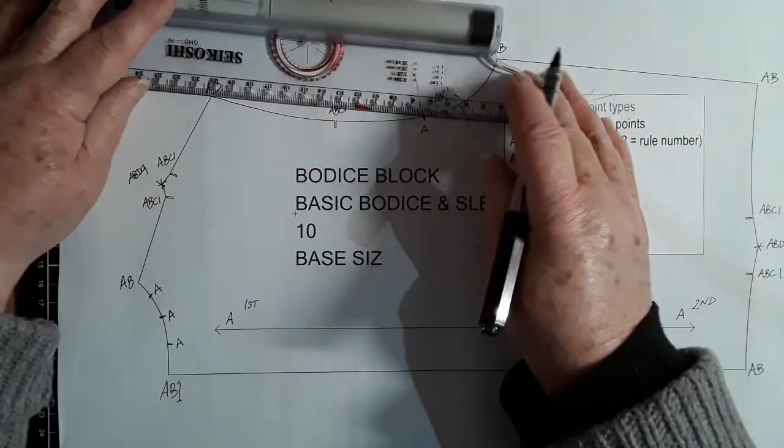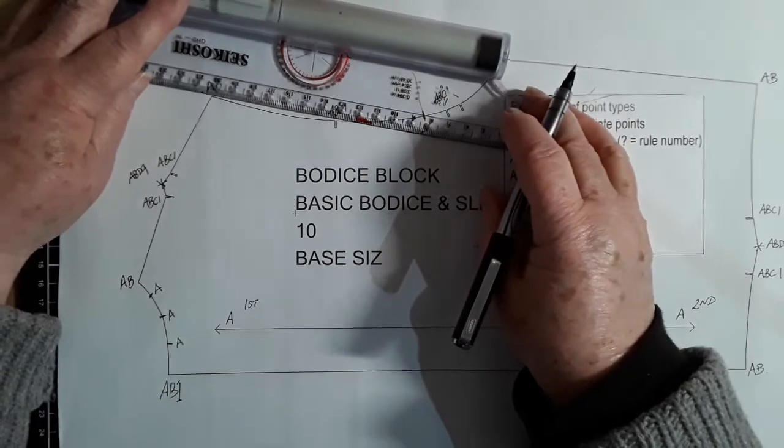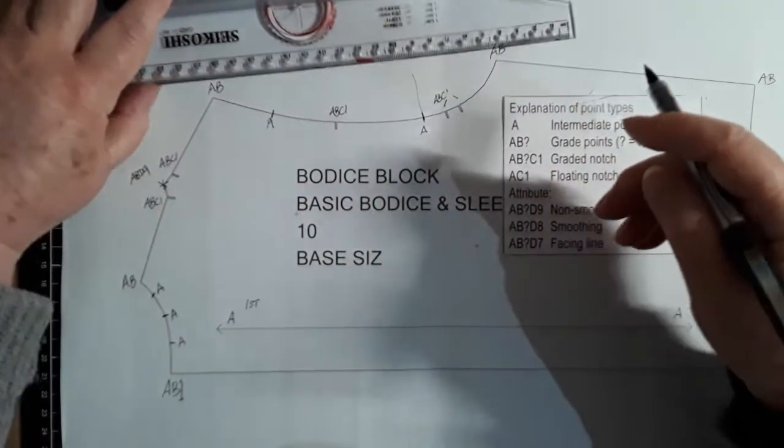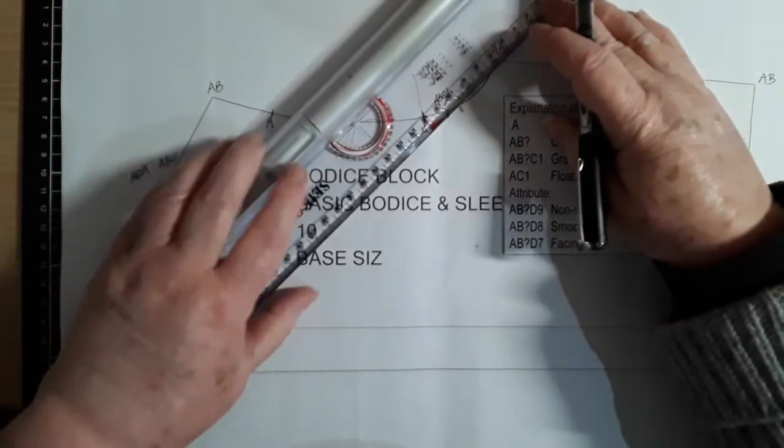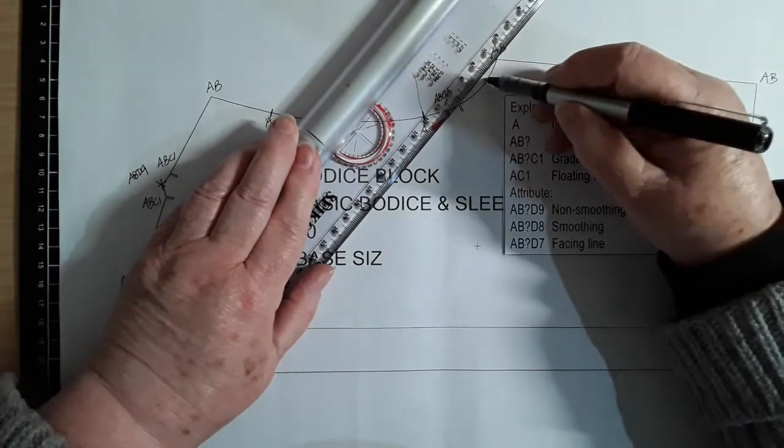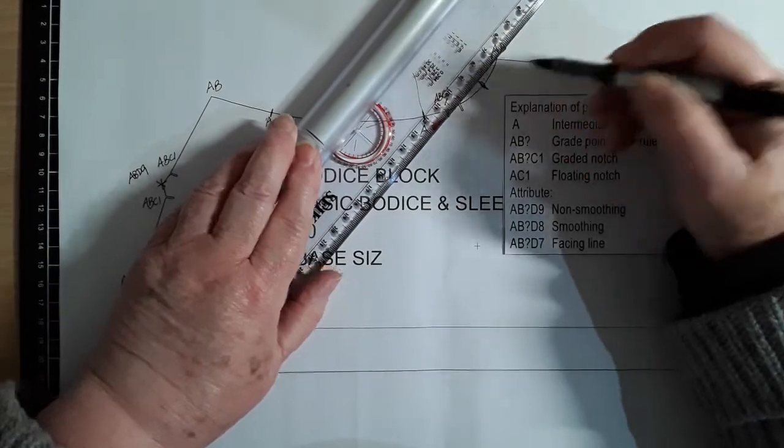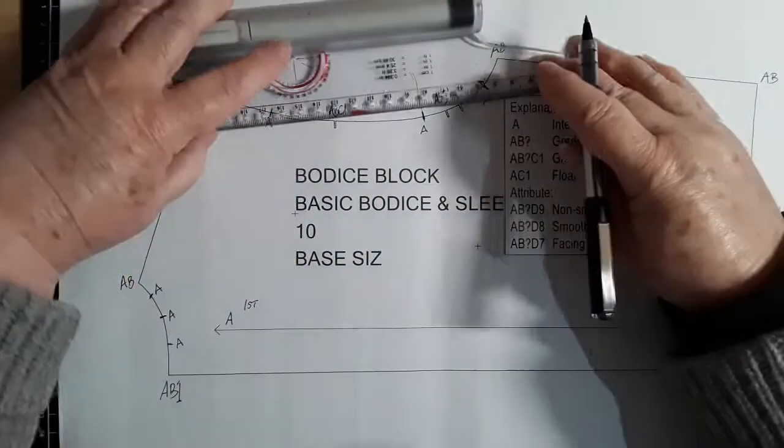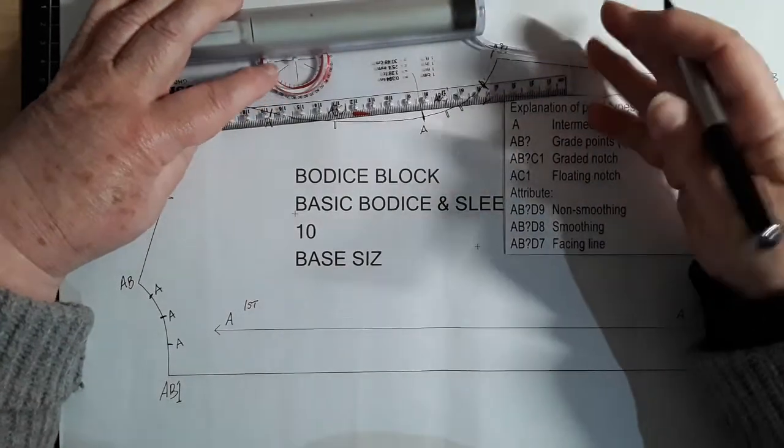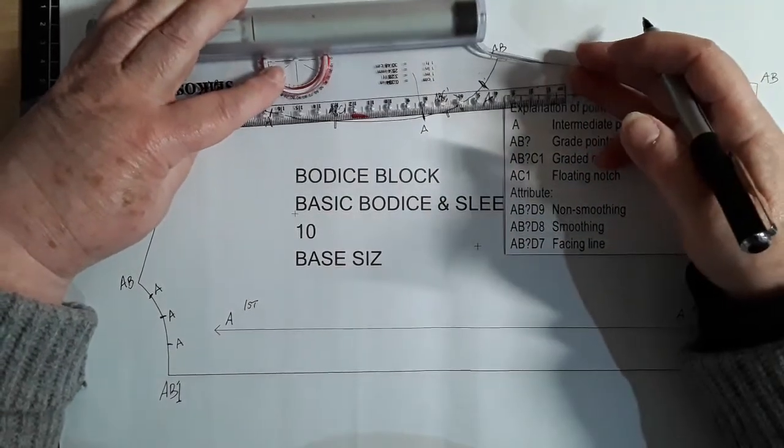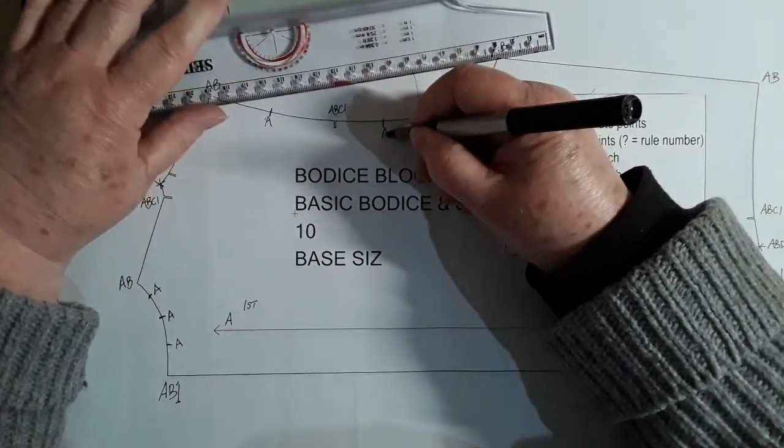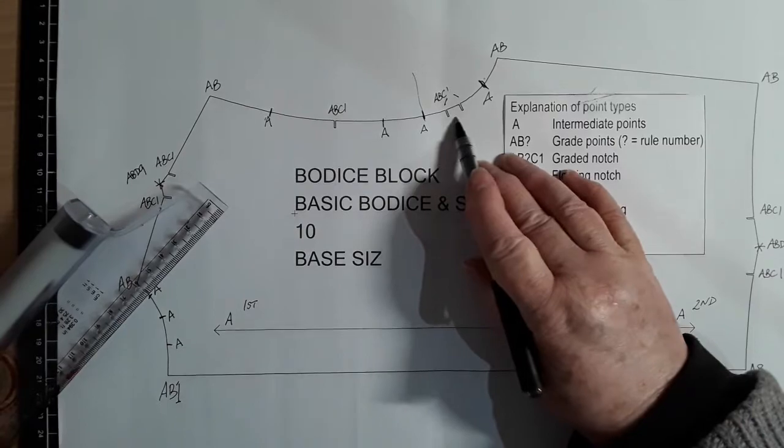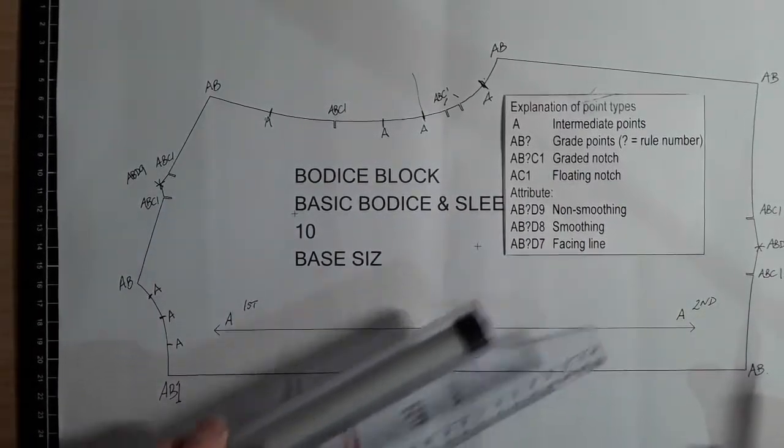That ABC1's there at the deepest part. A about there. So it's not an exact science but it gives you a good guide on where to put your curves in. Let's just see if this one needs one. Maybe another one there. And of course these ones are holding part of the curve as well so they'll be helpful here.